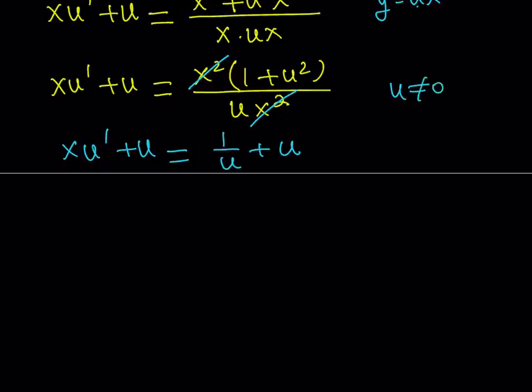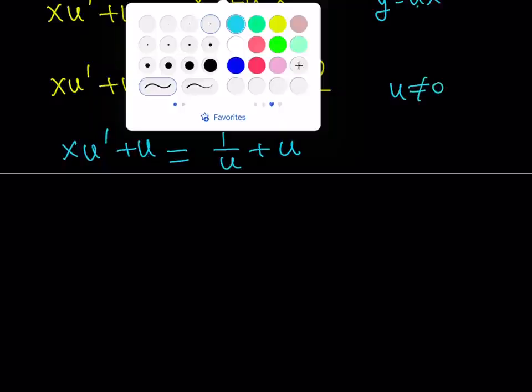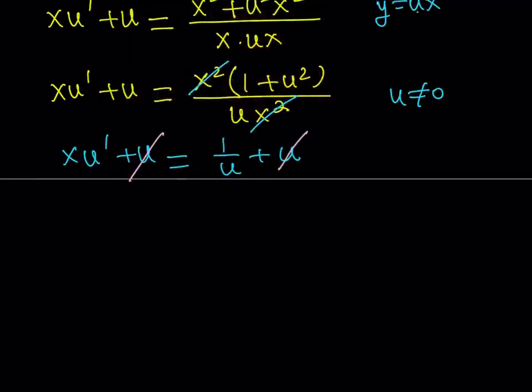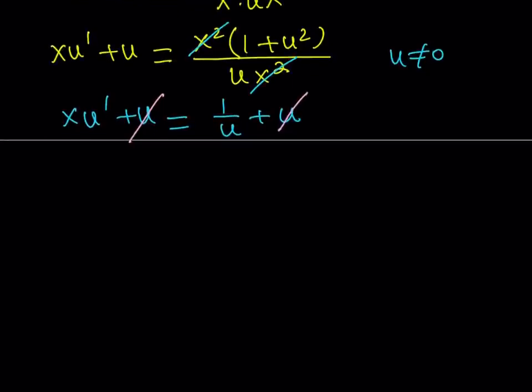Now, this is pretty nice because we can get rid of the u here. We can subtract u from both sides. And we get a simpler equation. Now, since u is a function of x, let's go ahead and write it as du/dx. And on the right hand side, we have 1 over u.